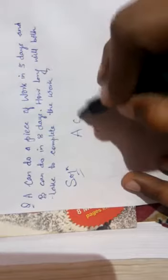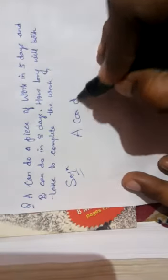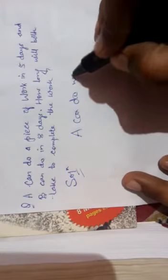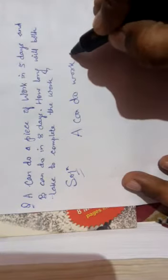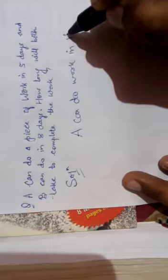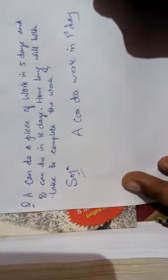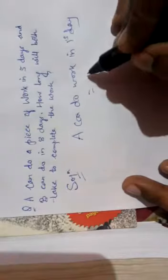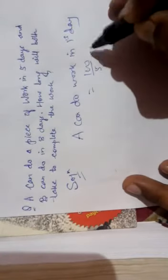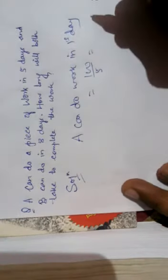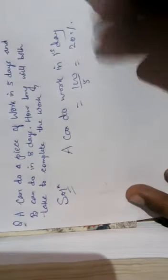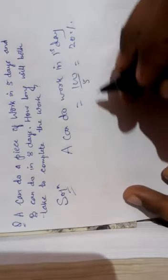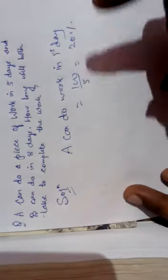A can do work in one day is equal to 100 by 5, because it is working the complete work in five days. So we will take 100 percent and divide it by 5. It will come out to 20 percent. So the rate of working of A is 20 percent, means A can do 20 percent of work in one day.